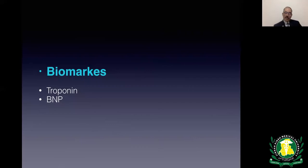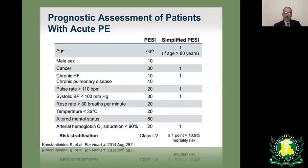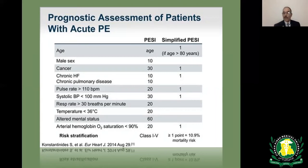Biomarkers — troponin and BNP — rise when increased clot burden suddenly elevates right ventricular pressure, causing troponin leak and BNP elevation. The simplified PESI has four parameters: congestive heart failure, cancer, heart rate ≥110 (1 point each), and systolic blood pressure <100 (1 point). A score of zero carries only 1% 30-day mortality.